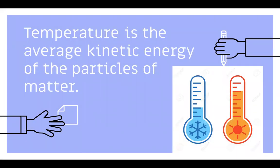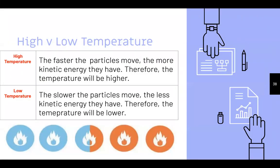Fourth topic: temperature. Temperature is the average kinetic energy of the particles of matter. Below is a thermometer — a way to measure temperature. High temperature versus low temperature: the faster the particles move, the more kinetic energy they have.